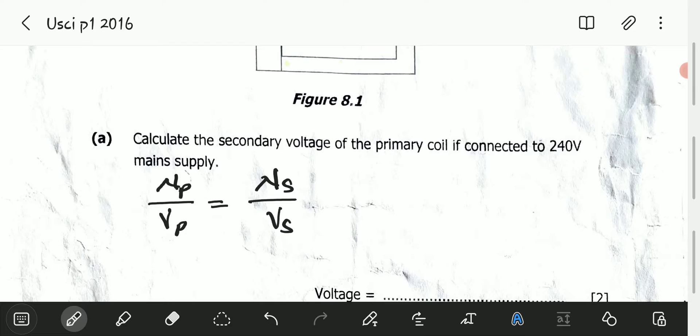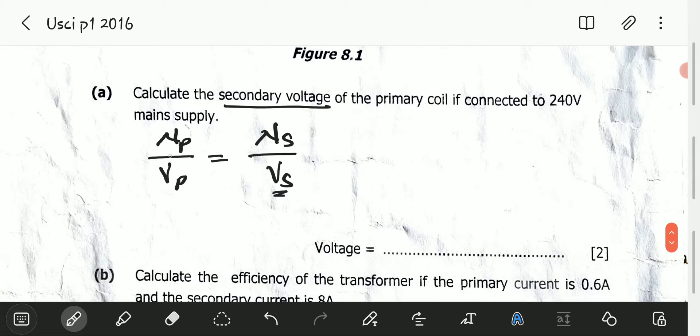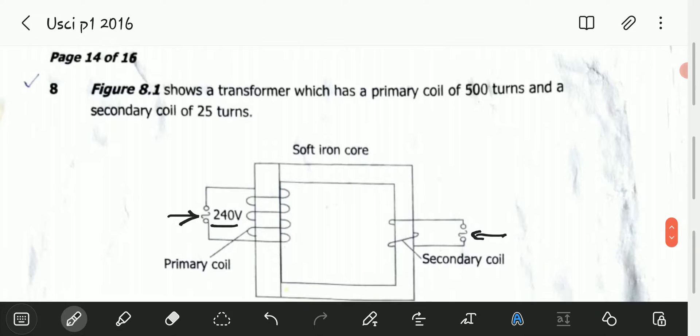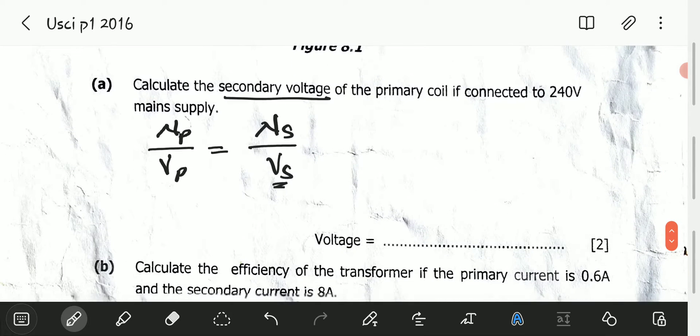We need to calculate the secondary voltage. We put in the number of turns in the primary, which is 500, divided by the voltage in the primary, which is 240, equals the number of turns in the secondary...